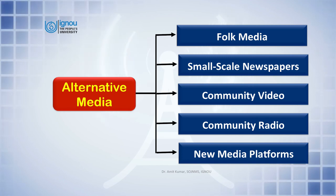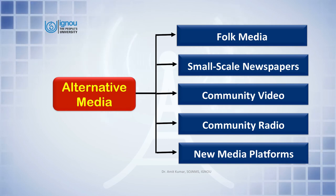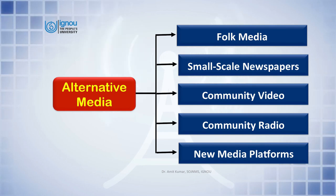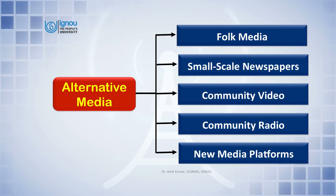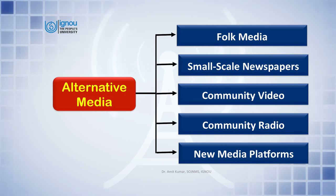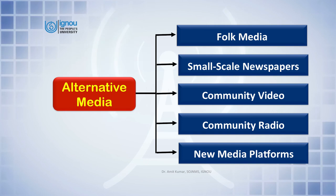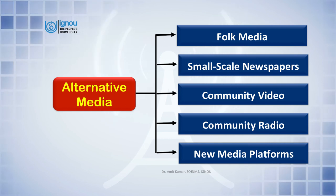The second form is small-scale newspapers. Khabar Lahariya is a very famous and successful example. It can be distributed within a limited area, but with the help of digital platforms it can reach a large number of readers. Such newspapers can highlight local issues — agriculture, government schemes — which are completely neglected by national and regional mainstream media.